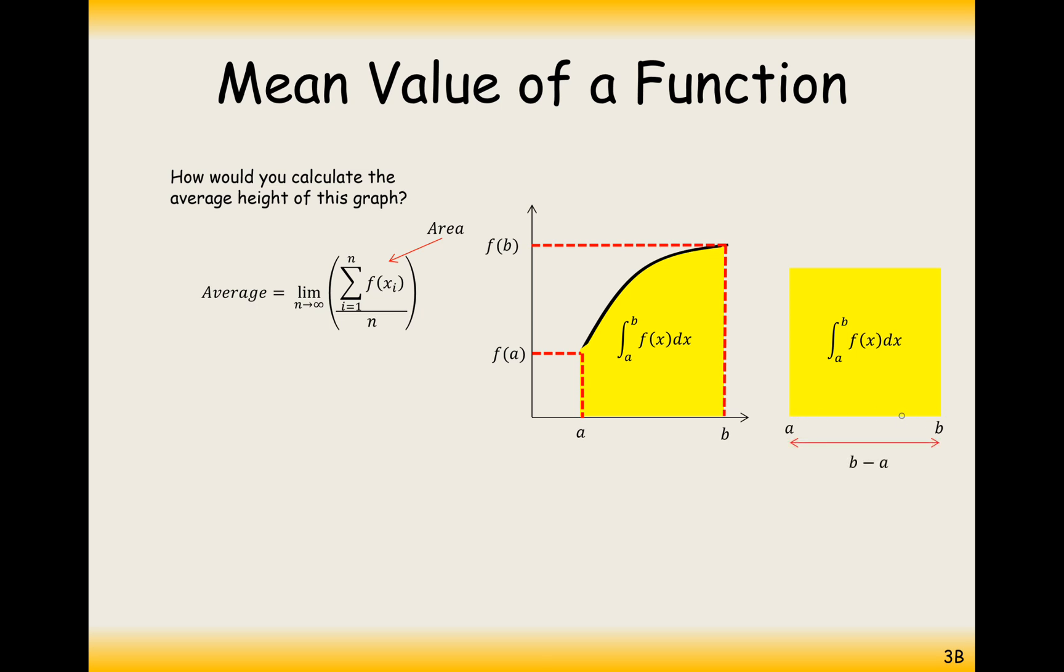Now, the width of this box is from a to b. So the width of the box is b minus a. If it was five to two, then the width of the bar would be three. So it's five minus two. That's where the three comes from.